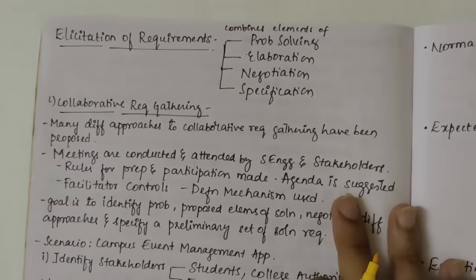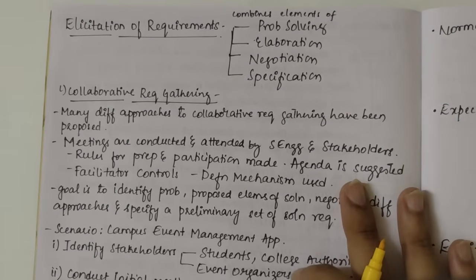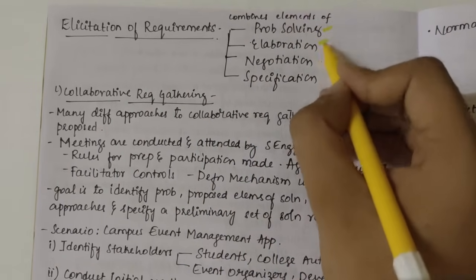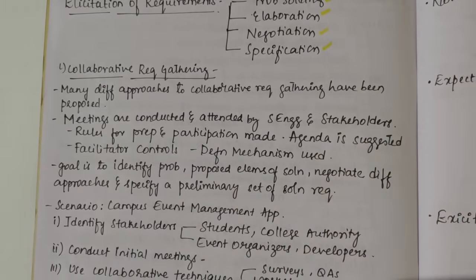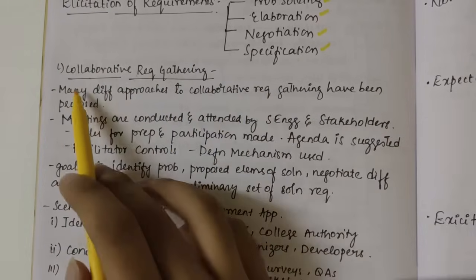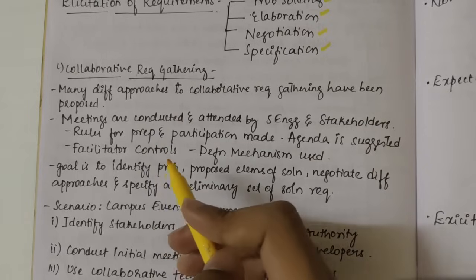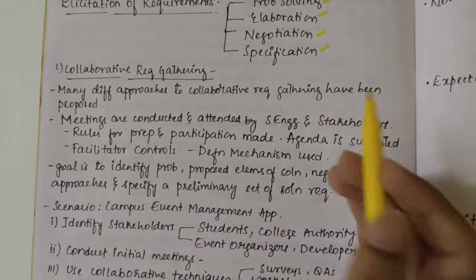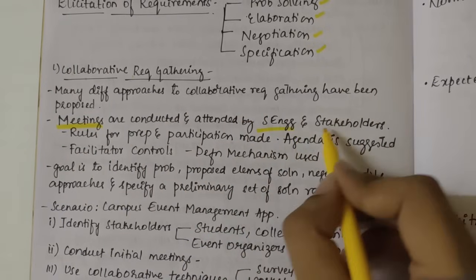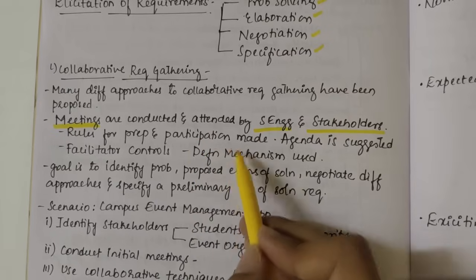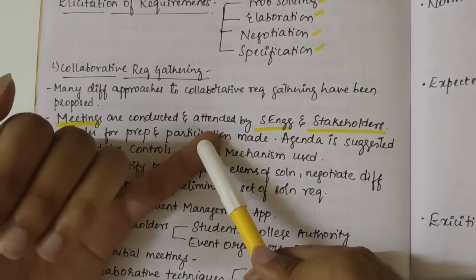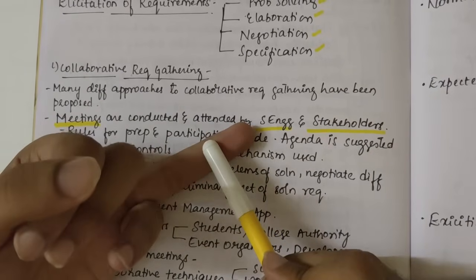Next we have Elicitation of Requirements, which means gathering requirements. It combines elements of problem solving, elaboration, negotiation, and specification. We'll look into Collaborative Requirement Gathering, where many different approaches are used. Specifically, meetings are conducted and attended by software engineers and stakeholders. Rules for preparation and participation are established: who will participate, time and venue are decided, and then the agenda is suggested for the meeting.